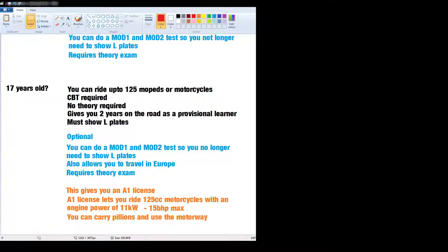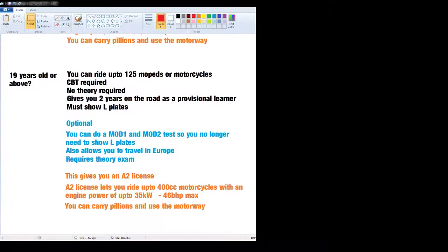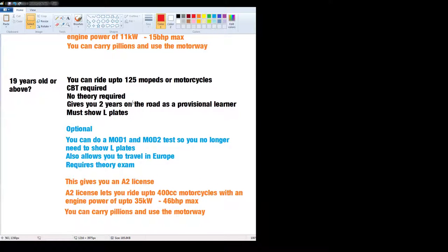Unless you really need something to run around. I don't know, maybe you're working. I wasn't working at 16, but I know some people do. Now, when you're 19 years old, you can ride up to a 125, CBT, exactly the same as before. Optionally, you can do your Mod 1 and Mod 2 test so you no longer need to show L-plates, same as before. But at 19, this will give you an A2 license. An A2 license lets you ride up to 400cc motorcycles with an engine power of up to 35 kilowatts or 46 brake horsepower max. You can carry pillions and use the motorway.